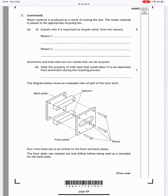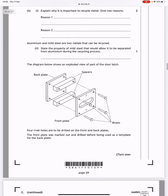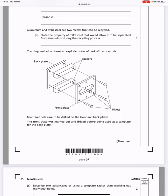The diagram below shows an exploded view of part of the door latch. You've got the back plate, the spacers, the front plate, and the rivets. Four rivets are to be drilled in the front and back plates.